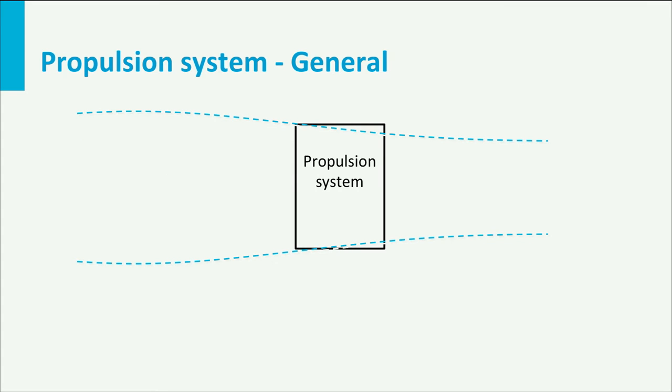Therefore, I can represent all propulsion types with this simple schematic representation. In steady conditions, the inflow velocity of air equals the flight speed of the aircraft, and the velocity behind the aircraft equals what we call the jet velocity. The mass flow of air through the engine is indicated by the term m-dot.